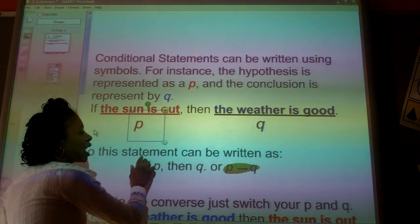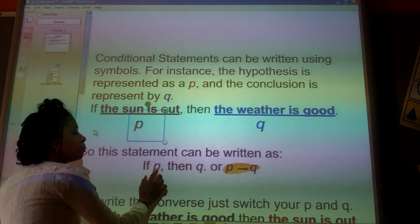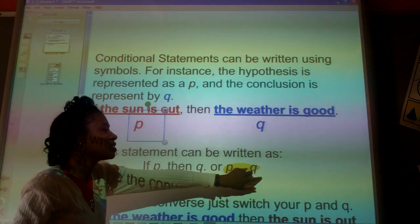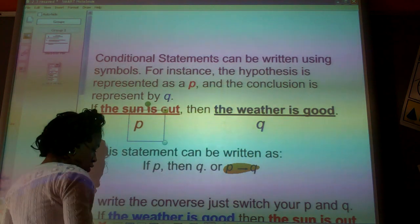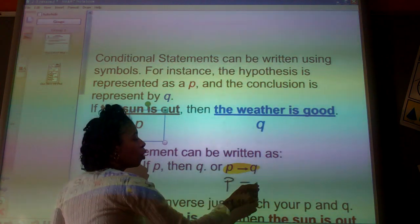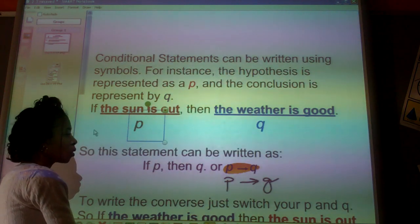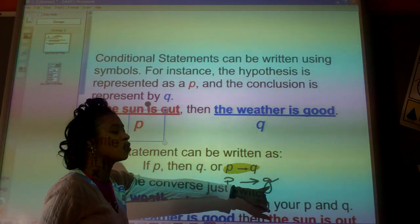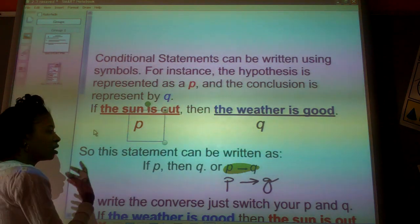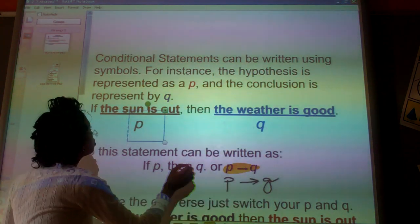So, this statement can be written like this: if P, then Q, and this is the actual way I write it. P, arrow to the right, Q. So, P going to Q means write the conditional statement with P, the hypothesis first, going to the conclusion second. Again, P is hypothesis, Q is conclusion.